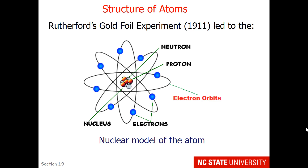This experiment took place back in 1911, and it led to the nuclear model of the atom. Here you see that there are two particles in the central area of the atom. These are called neutrons and protons, and it was thought that electrons orbited the outside of the atom, consistent with a positive central core and a lot of empty space in the atom.